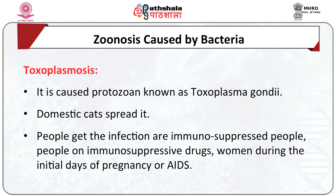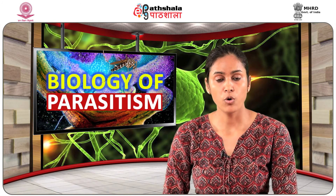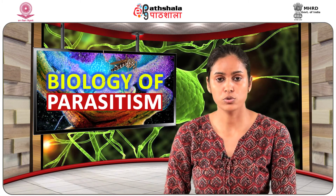Toxoplasmosis is caused by the protozoan Toxoplasma gondii. Humans get infection after coming in contact with fecal matter of domestic cats. Infection in cats occurs by eating birds, rodents or raw meat containing this parasite. Excreta of infected cats contain an infective stage of the parasite. Immunosuppressed people, aged people, people on immunosuppressive drugs, women during the initial days of pregnancy, and AIDS patients are at more risk of Toxoplasma gondii infection.